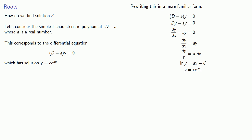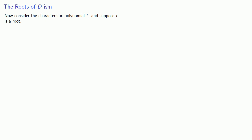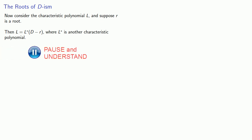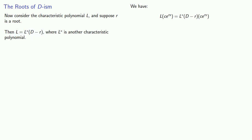Now we know what to do if our characteristic polynomial is linear. Admittedly, this isn't very exciting because linear characteristic polynomials correspond to separable differential equations, and we already know how to solve those. So now let's consider the characteristic polynomial L where R is a root. Then L can be written in the form L-star applied to D minus R, where L-star is another characteristic polynomial. Let's consider what happens when we apply L to our solution Ce to the power RX.